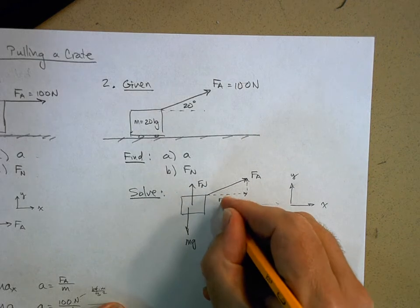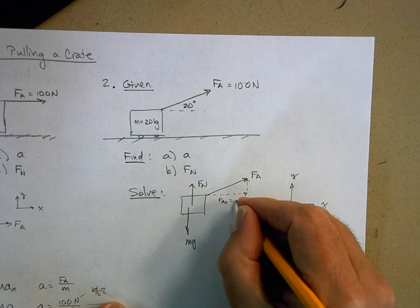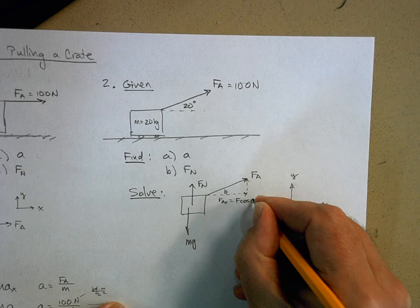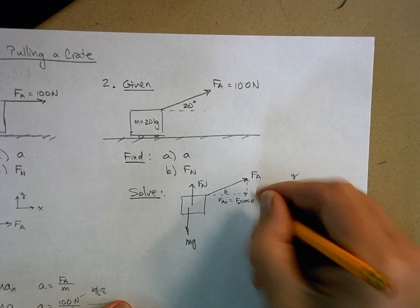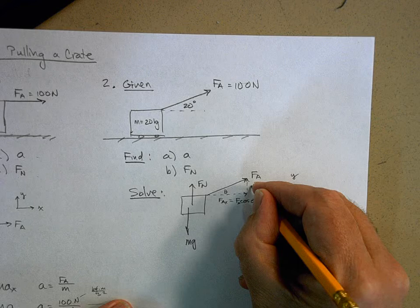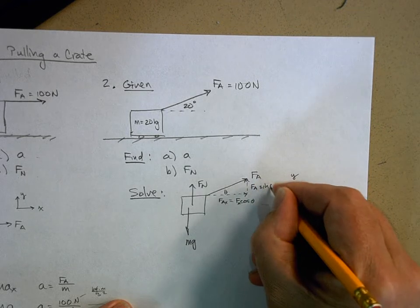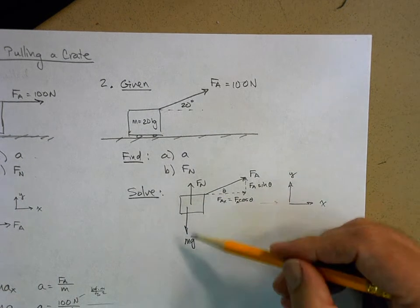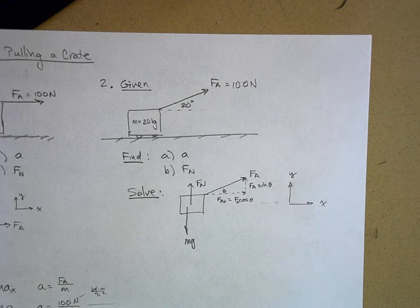This is FA in the x direction, and that's just going to be FA cosine theta. And then in the y direction this is going to be FA sine theta. The normal force and gravity are still in the y direction — they don't need to be broken up into components. Does anybody follow what I did?